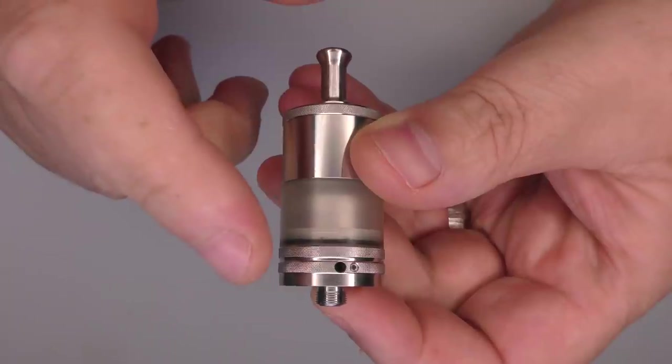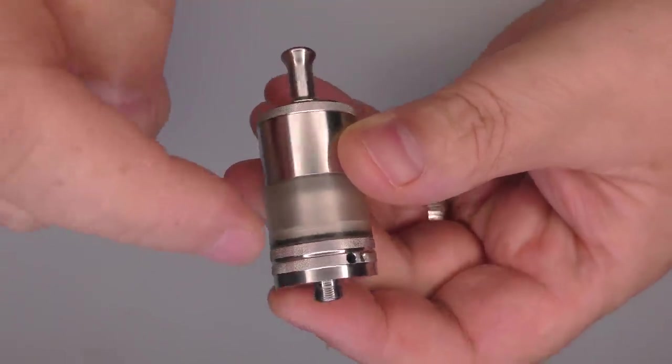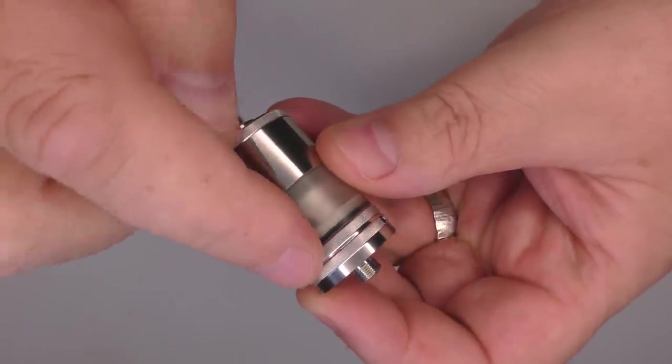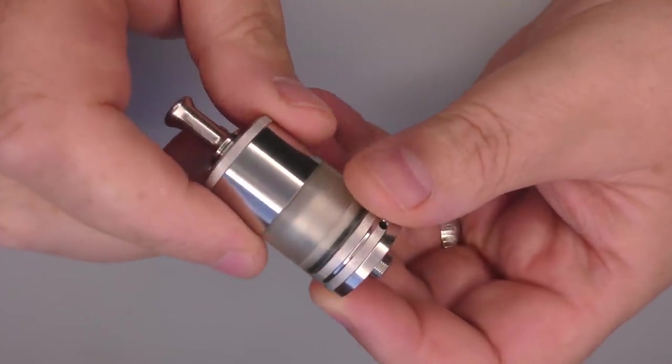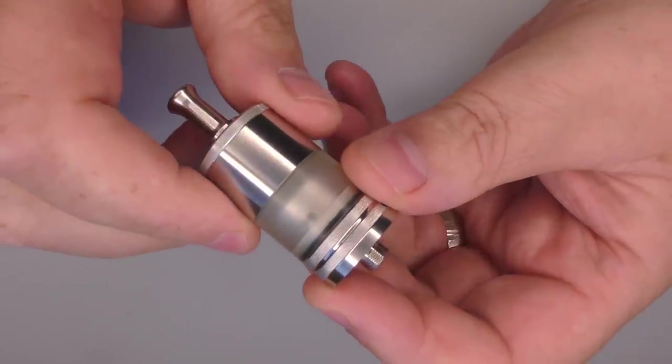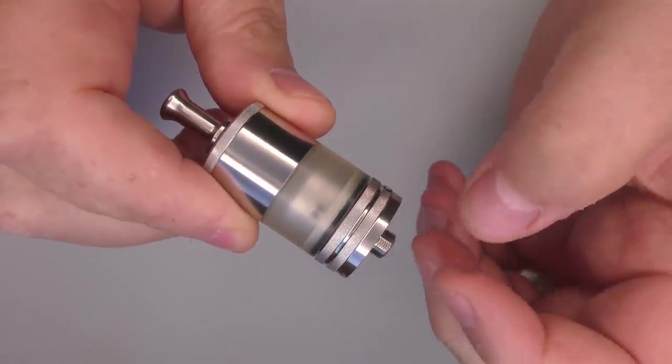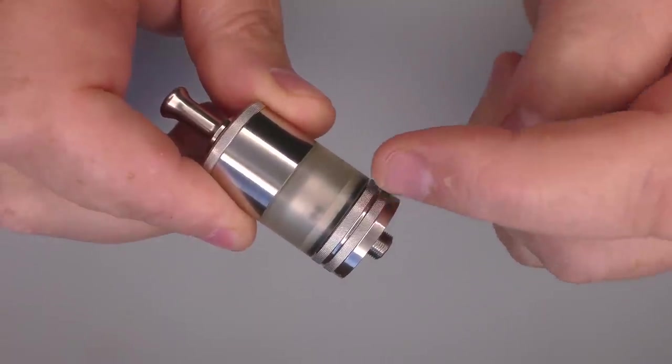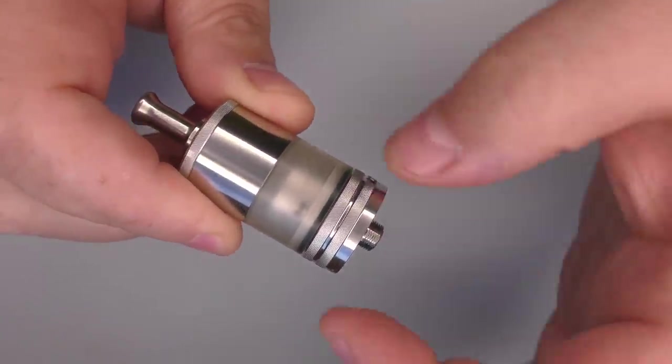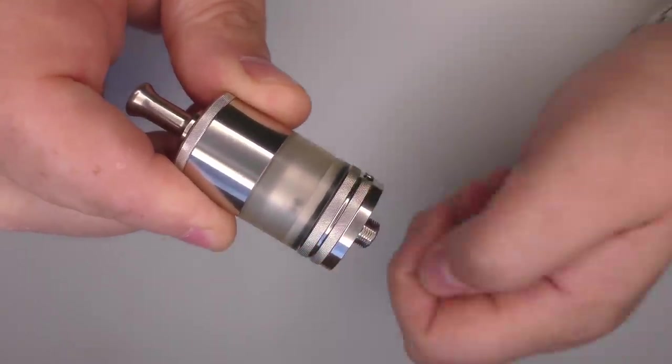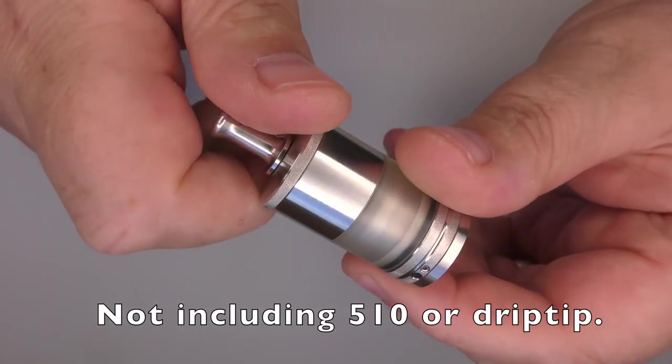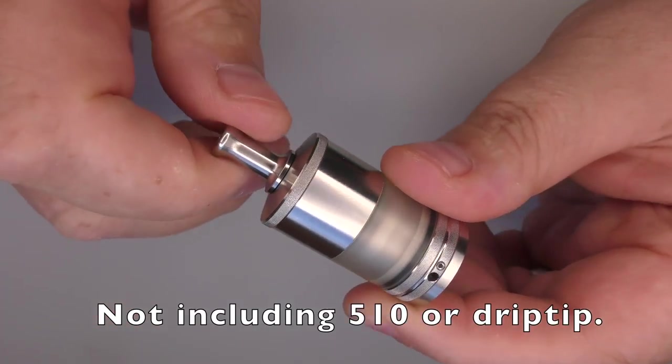We'll just pop that back on there like that. Only thing is that I do find that this will, depending on how you tighten that down, sometimes this tank will slide around here. Just make sure you've got it nipped up far enough and it'll stay all in one place. Now it is a 23mm diameter tank, but these knurled sections here take it out to about 23.3, 23.4, so depending on the mod you have, if it's a strict 23mm then you may struggle getting this to fit. Overall height is about 41.5 or thereabouts.